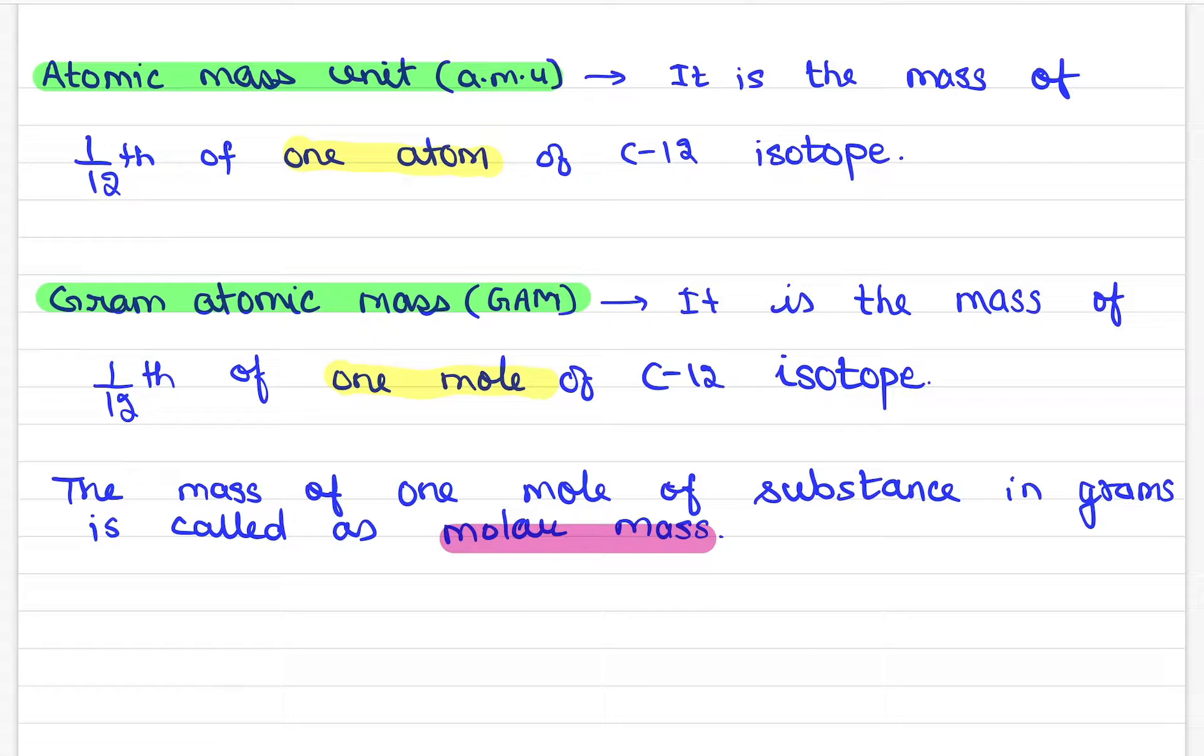Now, let's discuss this in detail. Atomic mass unit is mass of 1/12th of one atom of carbon-12 isotope. And I suggest you, even insist you, to learn this value of 1 AMU.